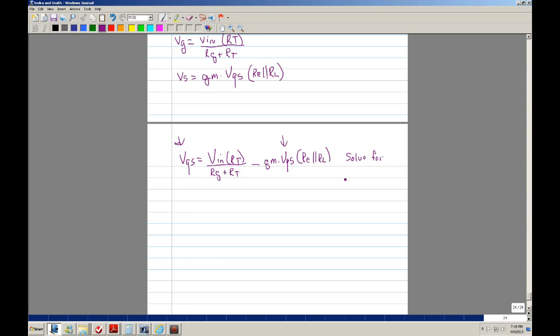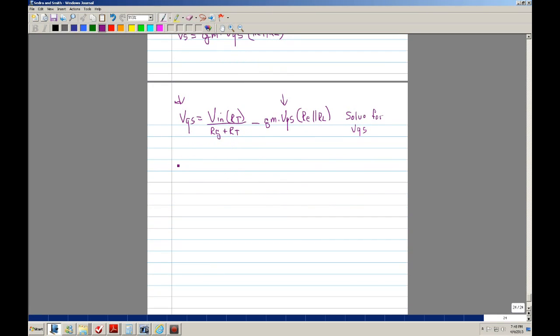Solve for VGS. If I bring this to the other side, I'll have 1 plus Gm times RE in parallel with RL, is equal to VN RT over RG plus RT. So we get VGS is equal to VN RT over RG plus RT divided by 1 plus Gm RE in parallel with RL.